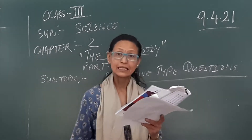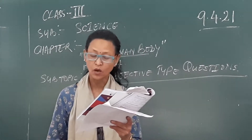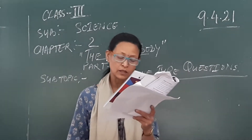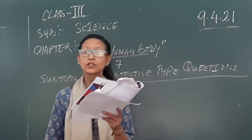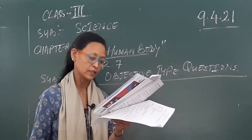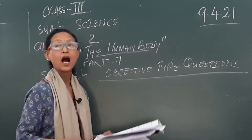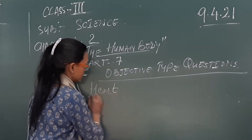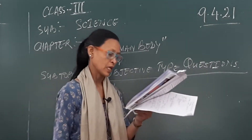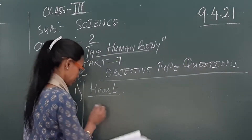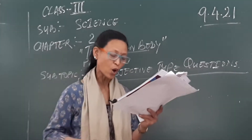Now let's discuss this answer: name one organ associated with each organ system. Number one — circulatory system. What is the name of an organ associated with the circulatory system? It is the heart. H-E-A-R-T. Heart is an organ associated with the circulatory system.